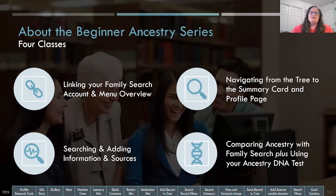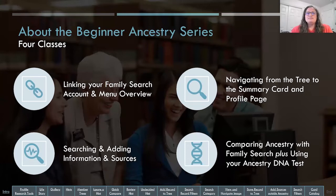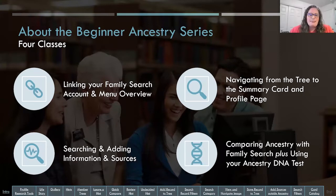So this is Part 3 of 4 classes. Next we'll be doing Comparing Ancestry with FamilySearch, plus using your Ancestry DNA test to help with your research. The previous two weeks we did deep dives into navigating the tree, the summary card, the profile page, and started with linking your FamilySearch account and menu overview. We do repeat these classes from time to time, and recordings of the classes are available from the website.